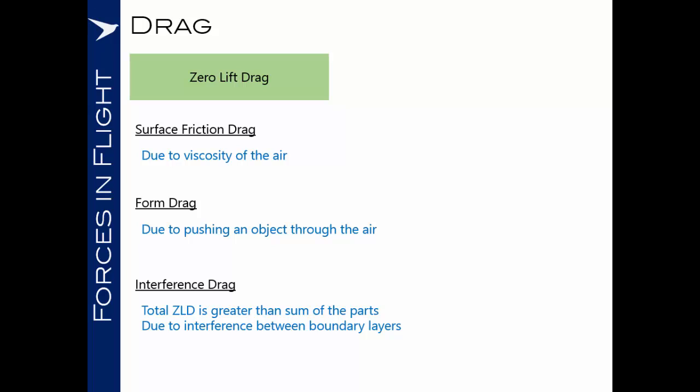And the third component of zero lift drag is interference drag. It's noted that the total zero lift drag is greater than the sum of the parts. That is to say that if we were to add up all of the little increments of form drag and surface friction drag over the whole of the airplane, we'd actually note that it is less than the total quantity of zero lift drag that we have experienced.